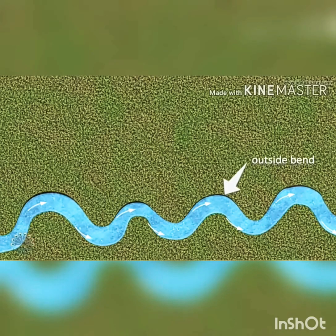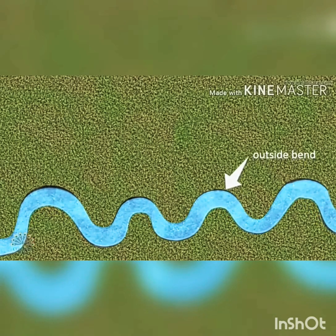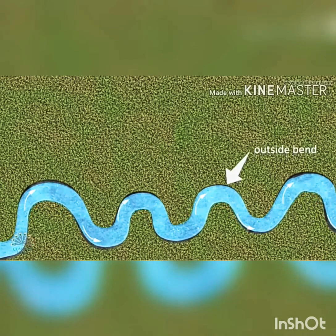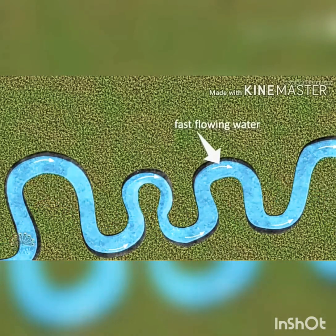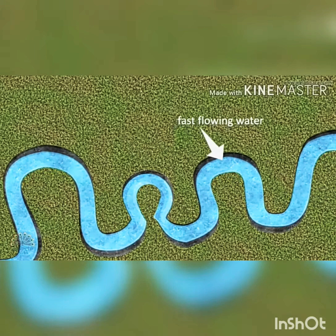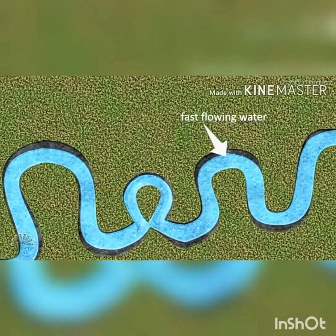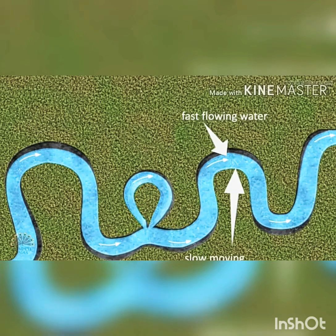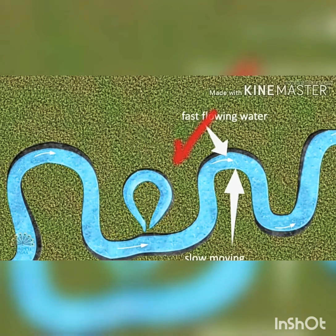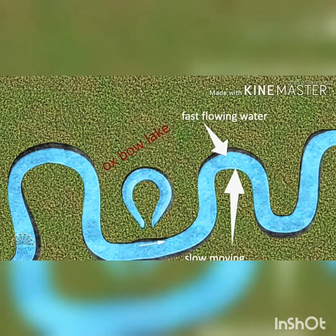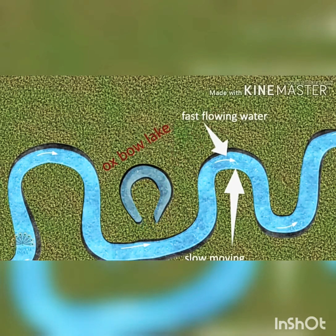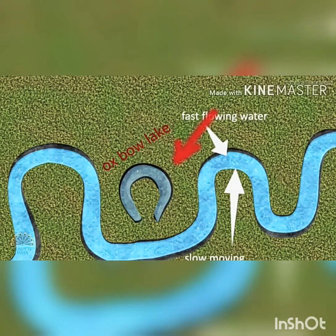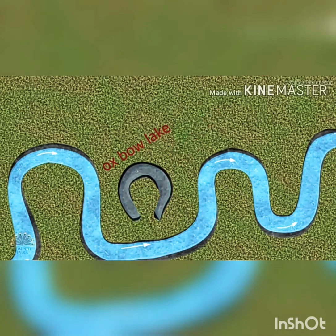Due to continuous erosion and deposition along the sides of the meander, the ends of the meander loop come closer and closer. In due course of time, the meander loop cuts off from the river and forms a cutoff lake, also called an oxbow lake. After some duration of time, the oxbow lakes become very dry.